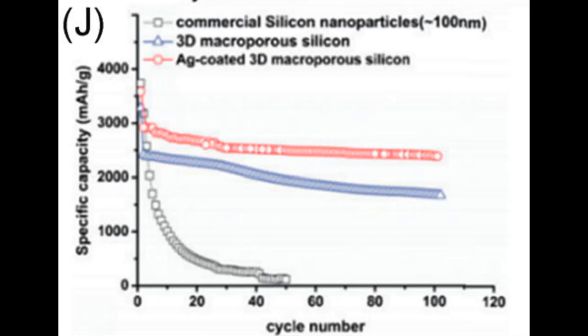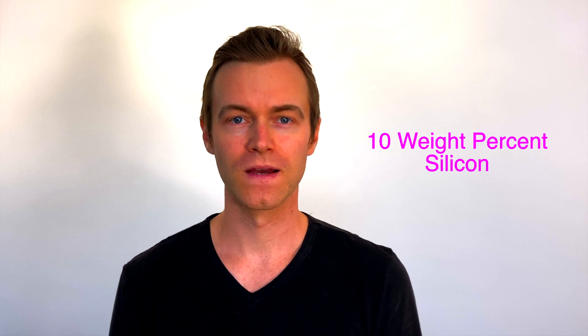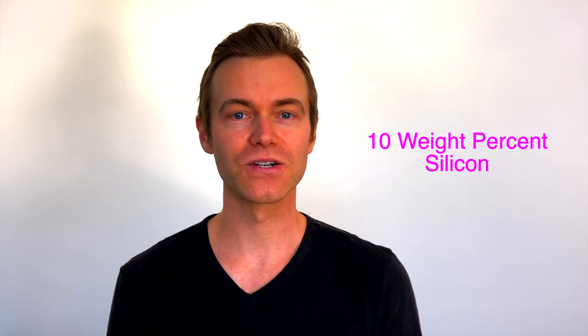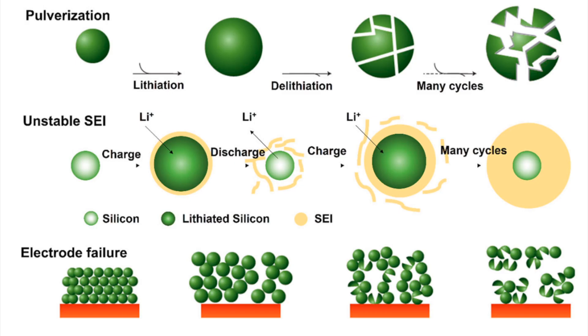The current state of using silicon in lithium batteries is limited in that the maximum weight percentage of silicon in the anode is around 10%. At this level, manufacturers have been able to increase the specific capacity of the cell without sacrificing too much cycle life. The issue with higher-loading silicon anodes is that all the issues I mentioned before start to degrade cycle life greatly.